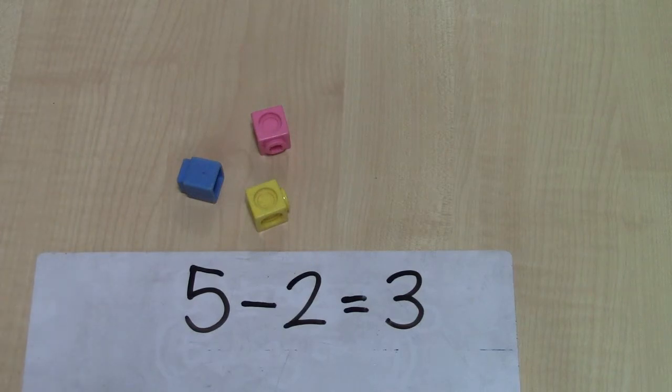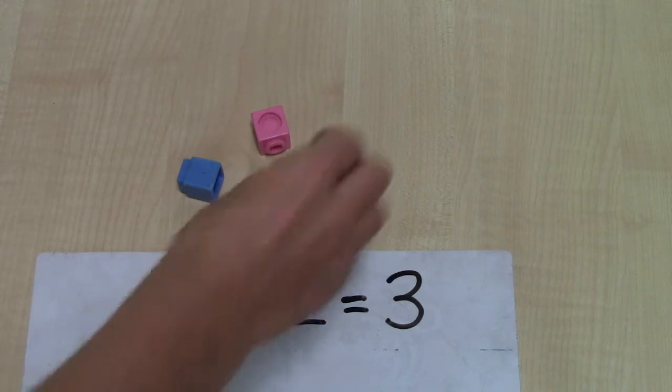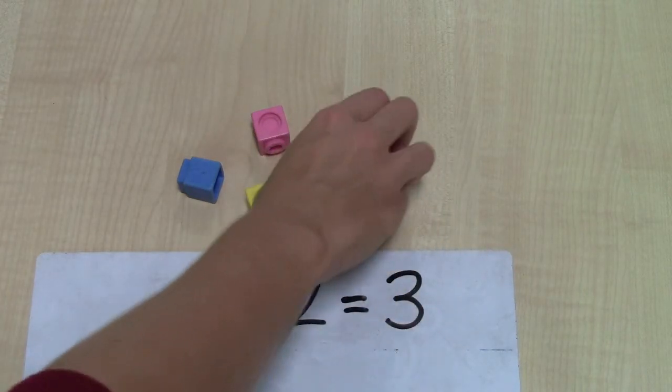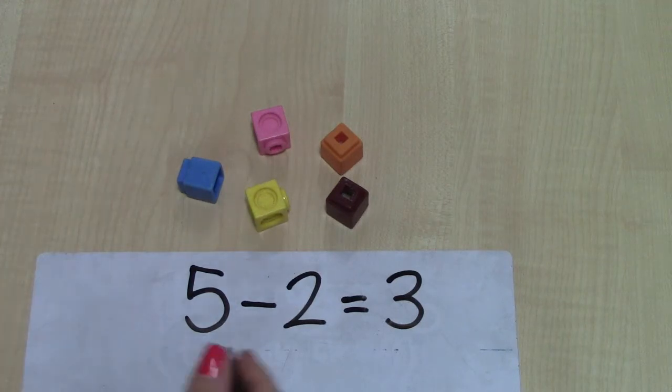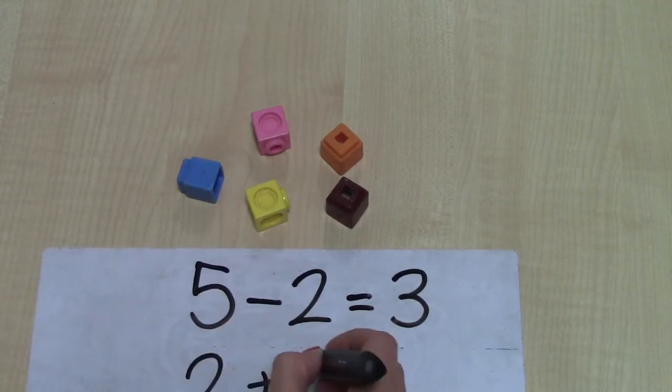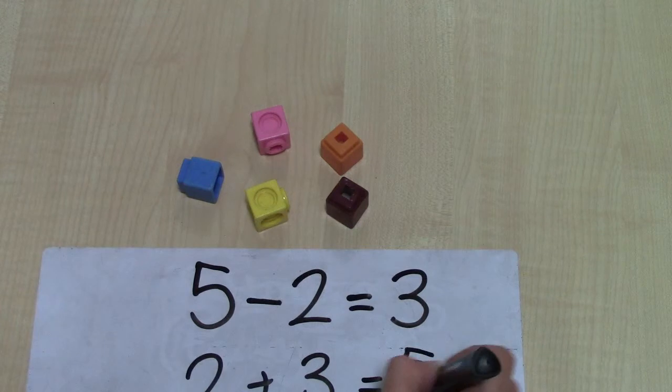You might also show, it's really important to show the inverse with addition as well. If I had three and I had to put back my two, altogether I've now got five. So two add three equals five.